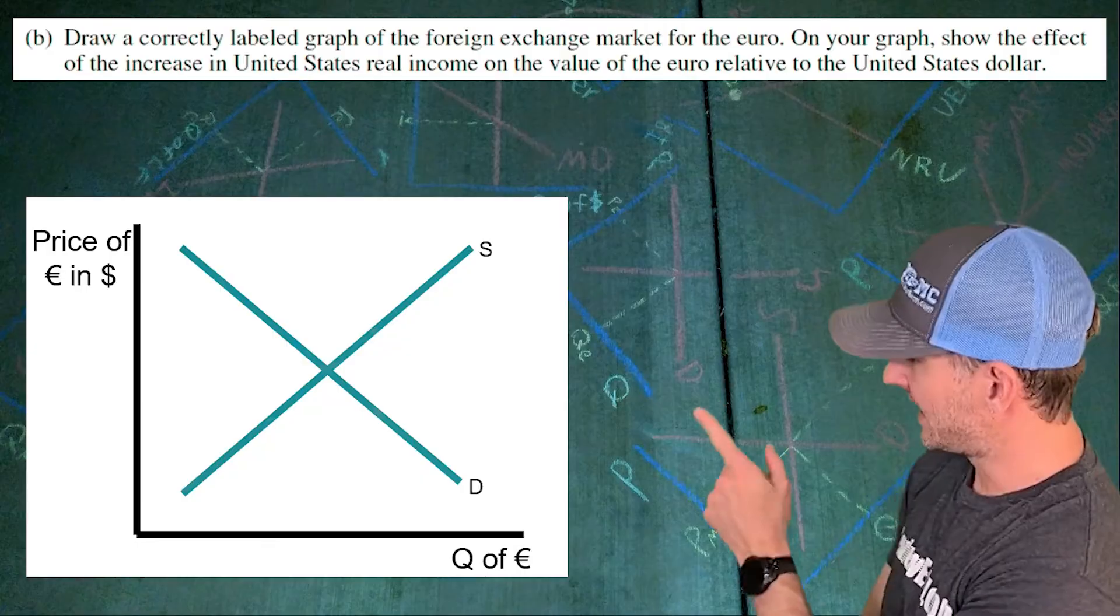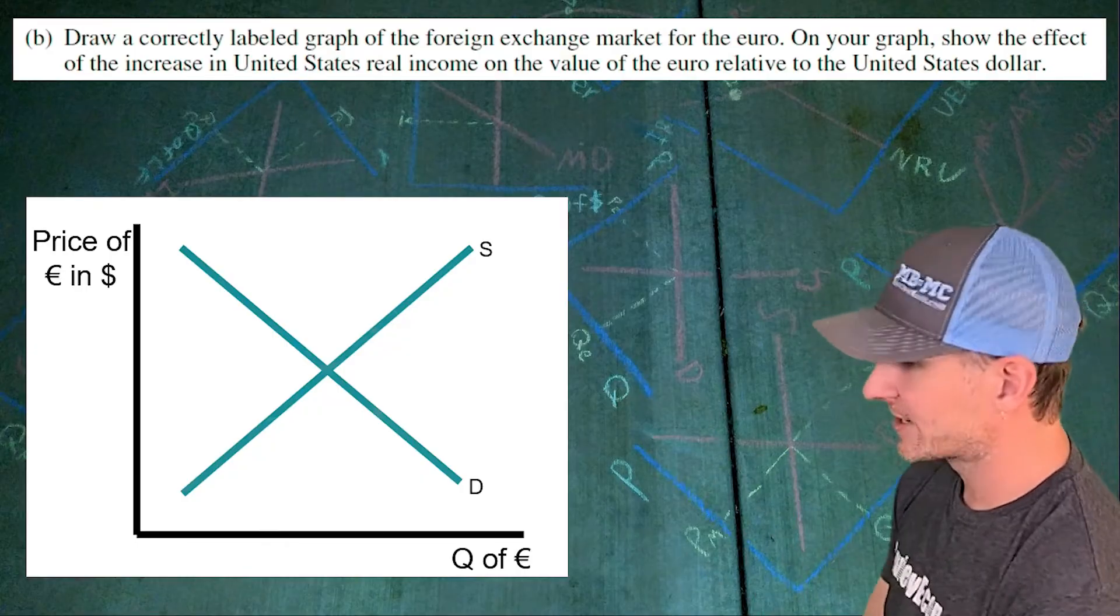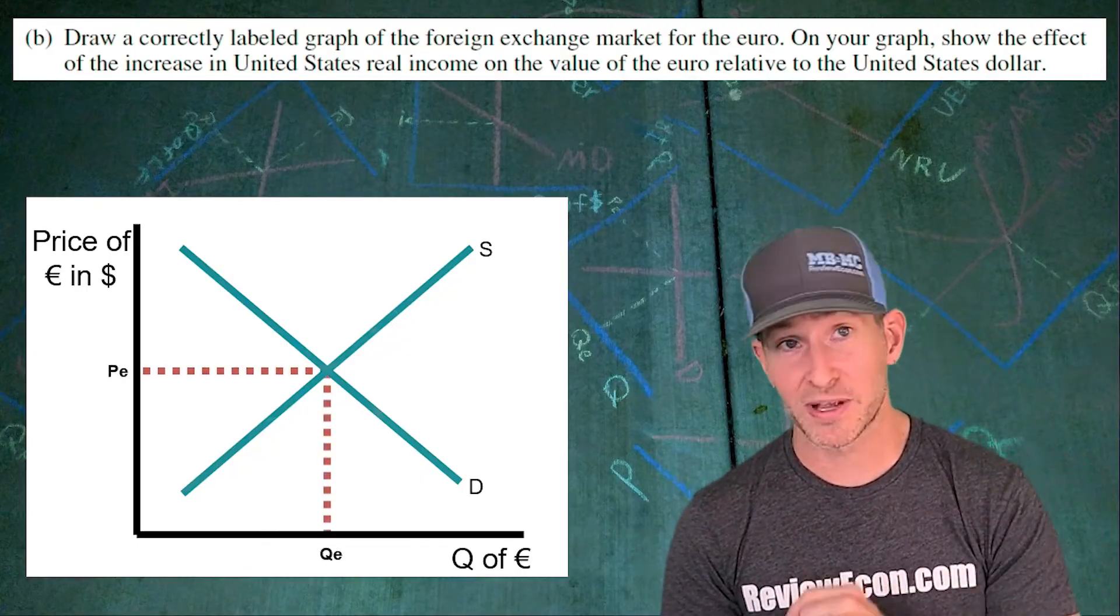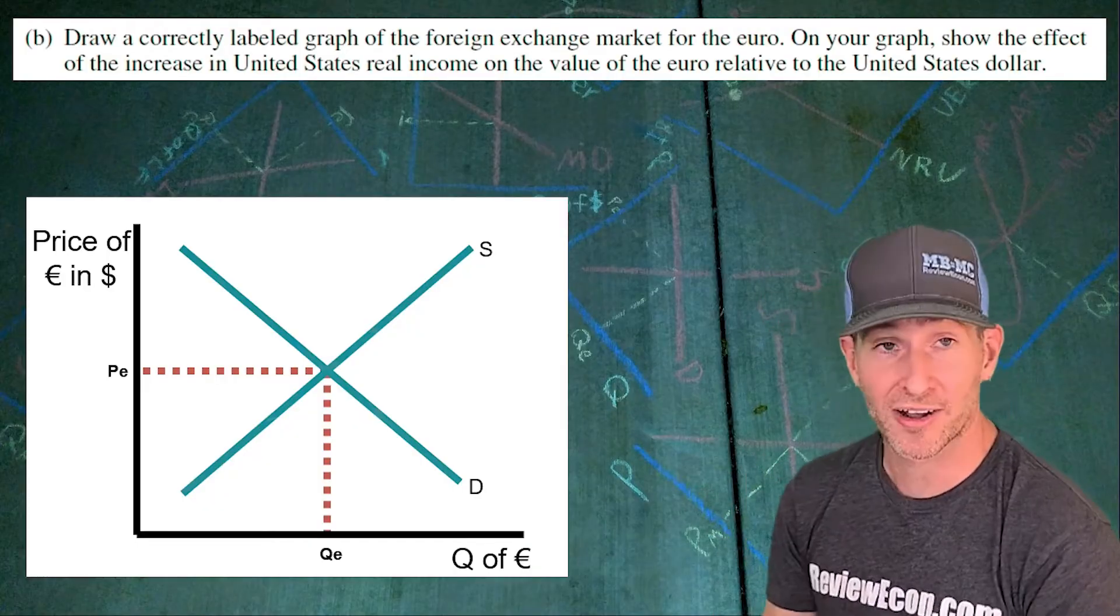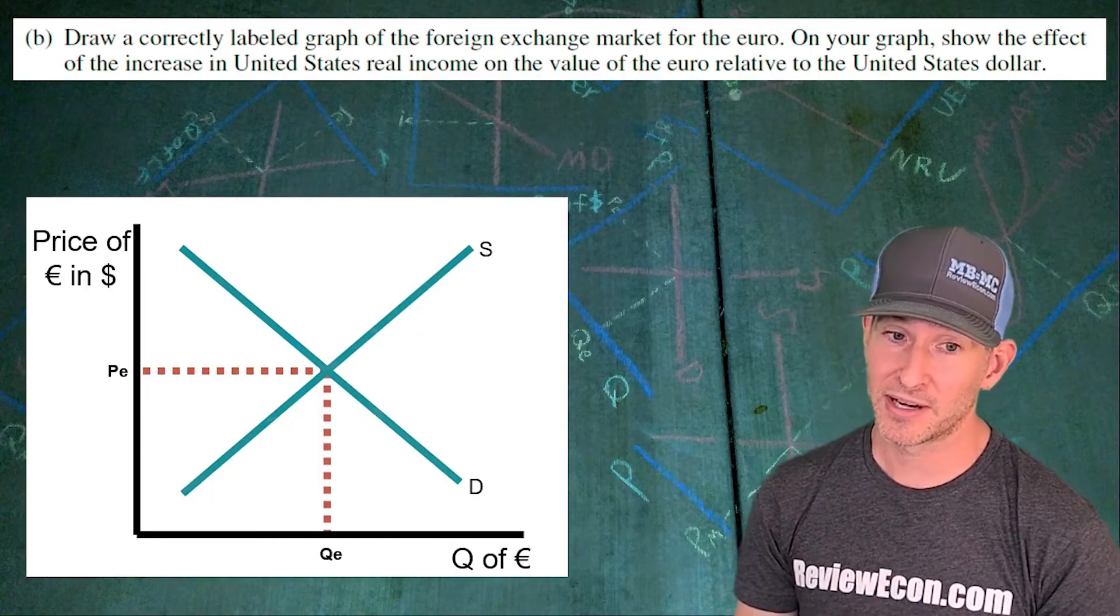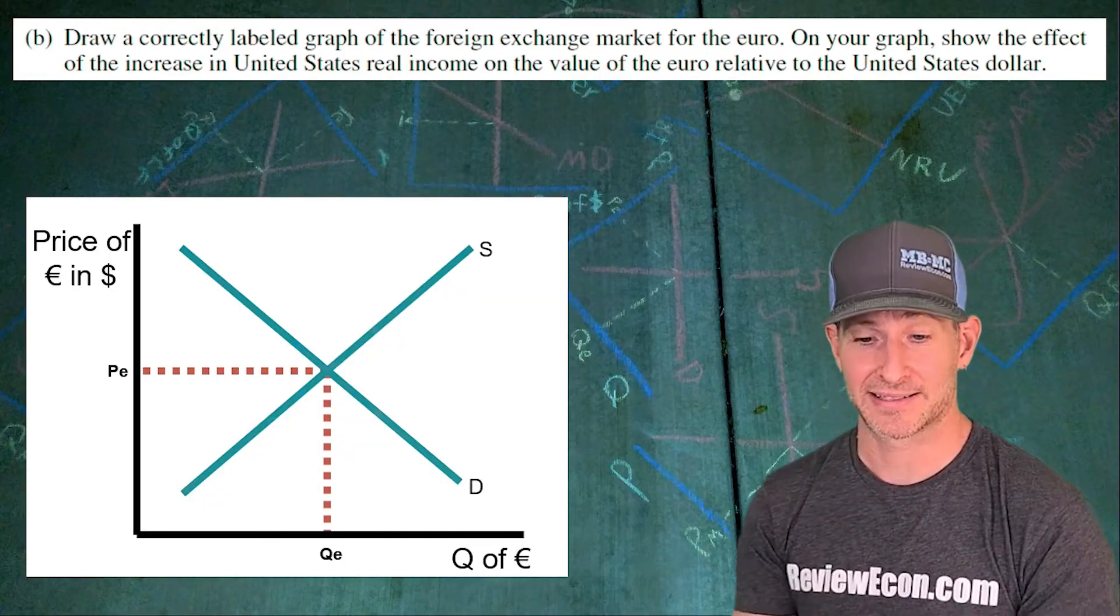Draw out our demand curve downward sloping, our supply curve upward sloping. We should mark our equilibrium exchange rate, PE is what I call it here, and our equilibrium quantity of euros as QE down there on the x-axis.